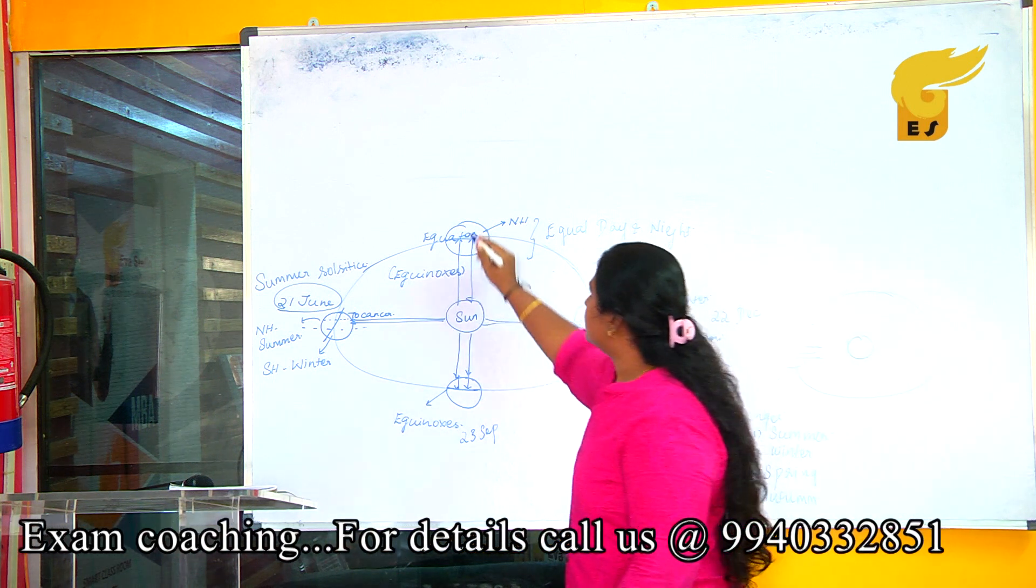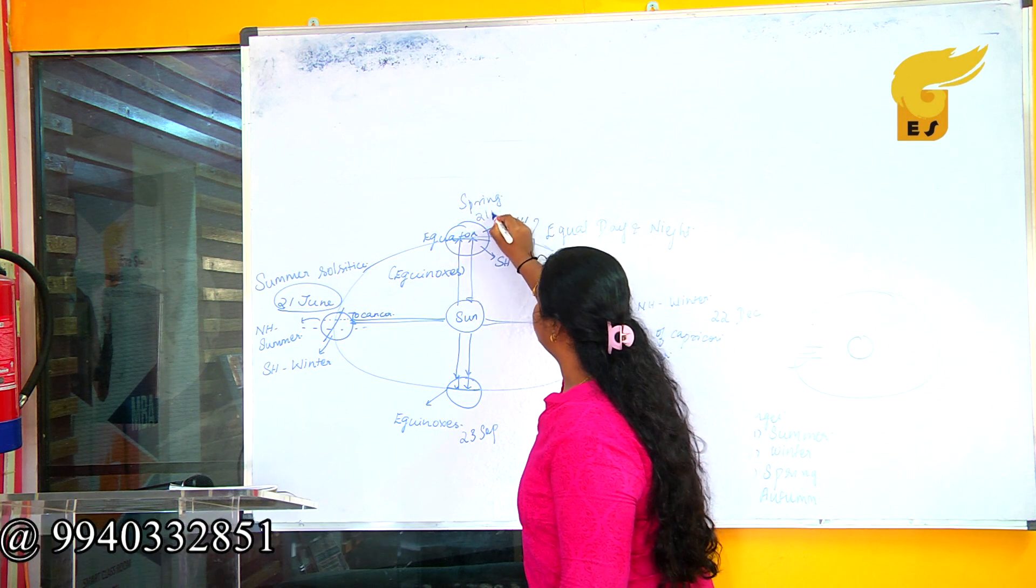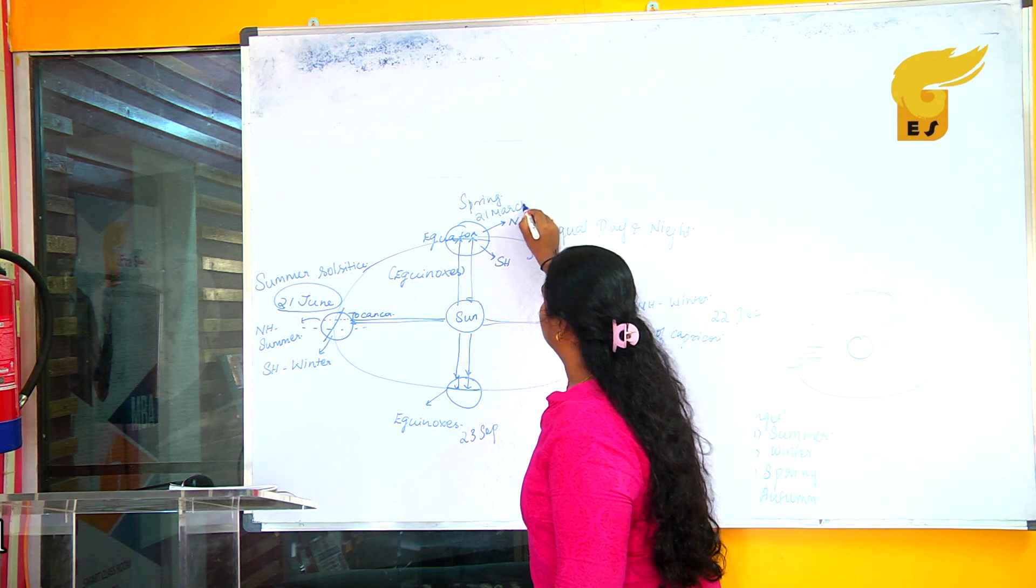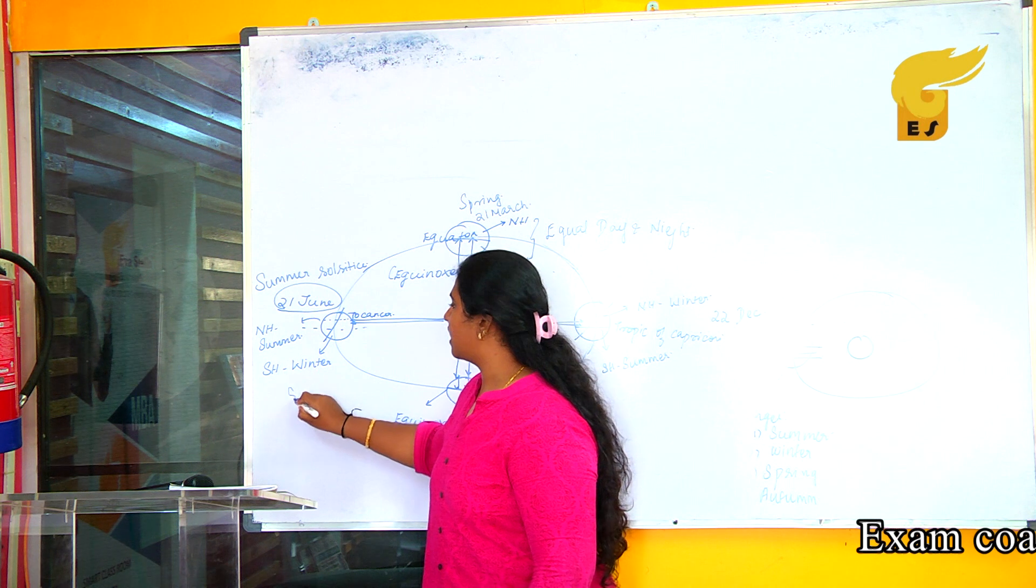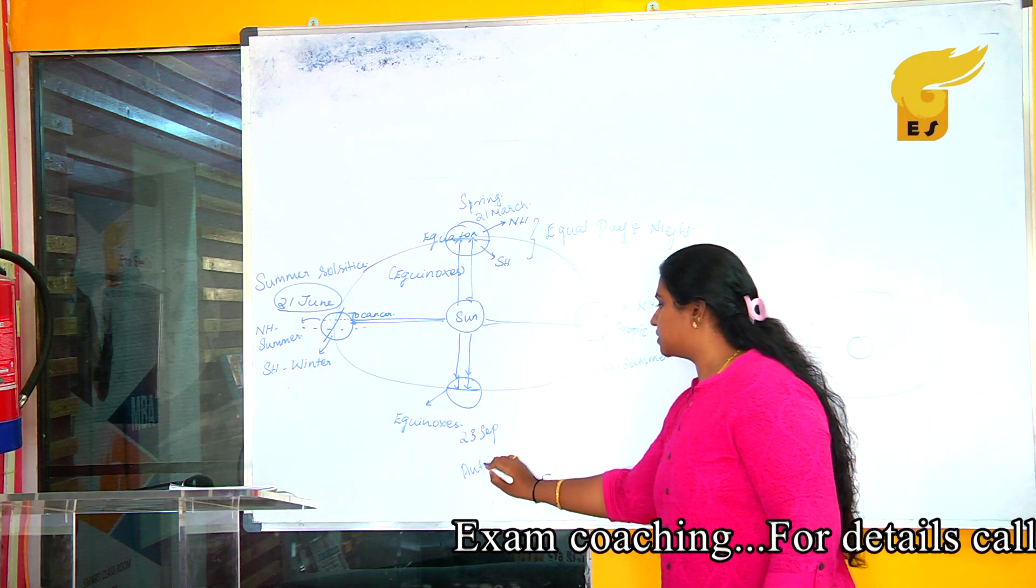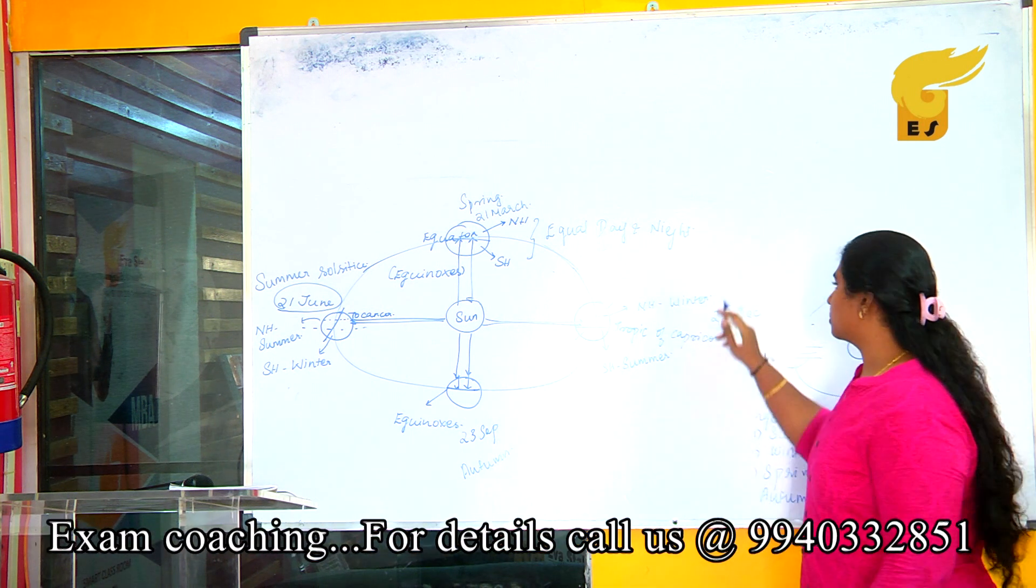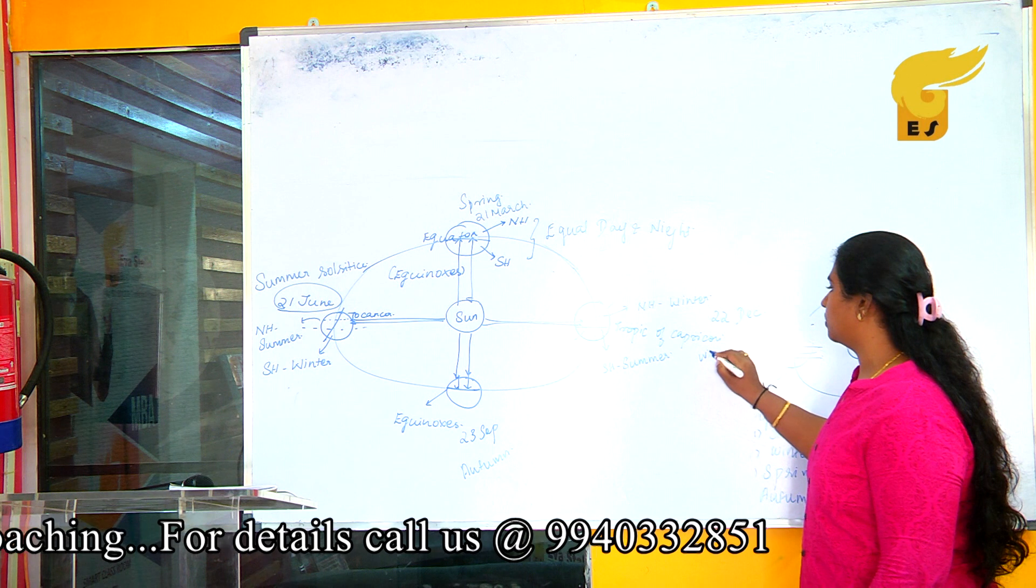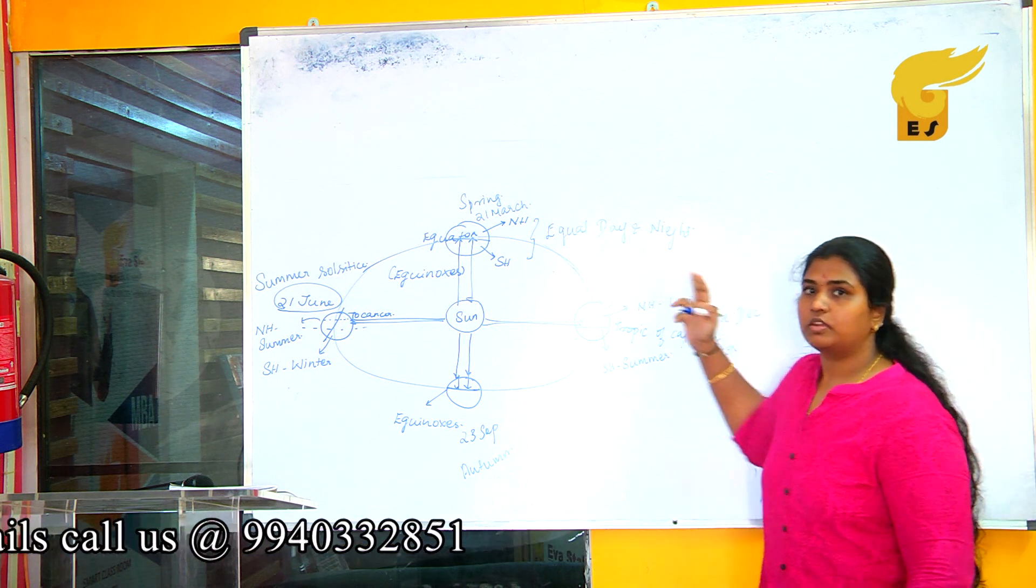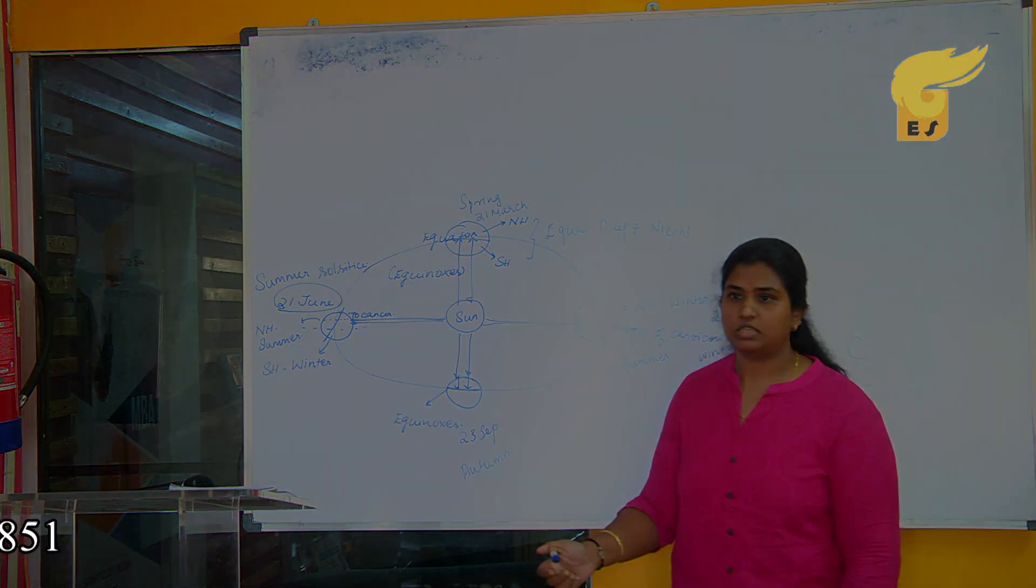This literally completes this time period as Spring, which will happen on 21st March. 21st June, you will have Summer Season. 23rd September, you will have Autumn Season. And finally, on 22nd December or during December month, you will have Winter Season. This is how your revolution of your Earth creates changes in seasons.